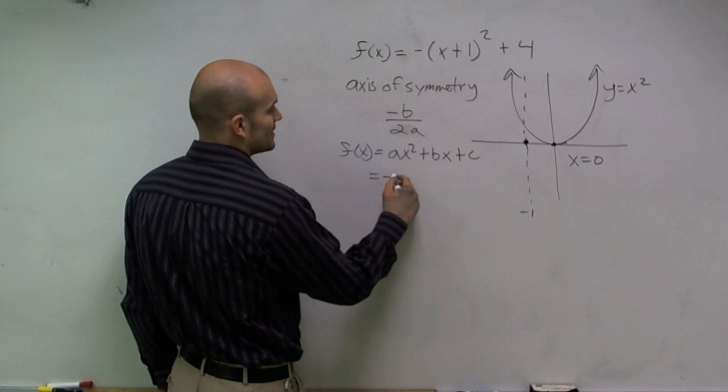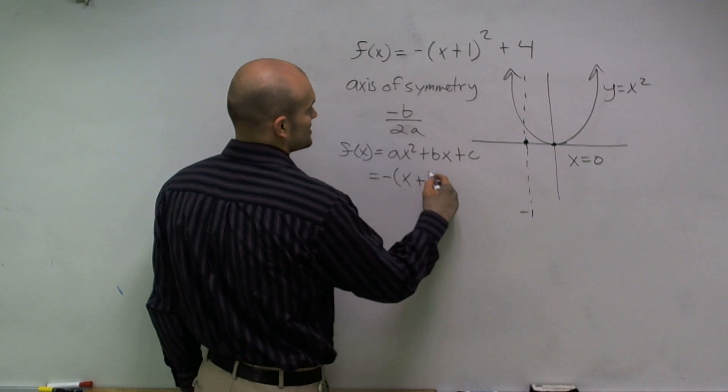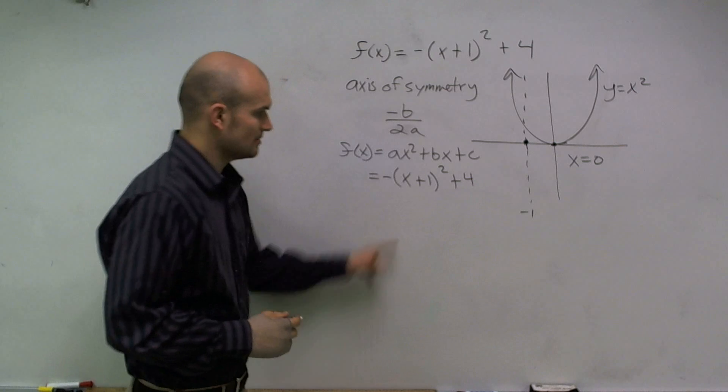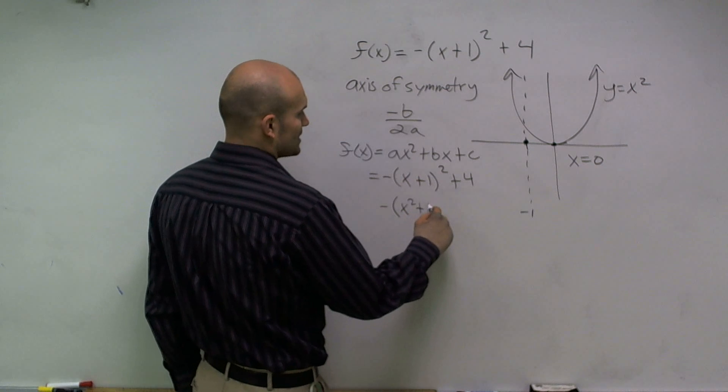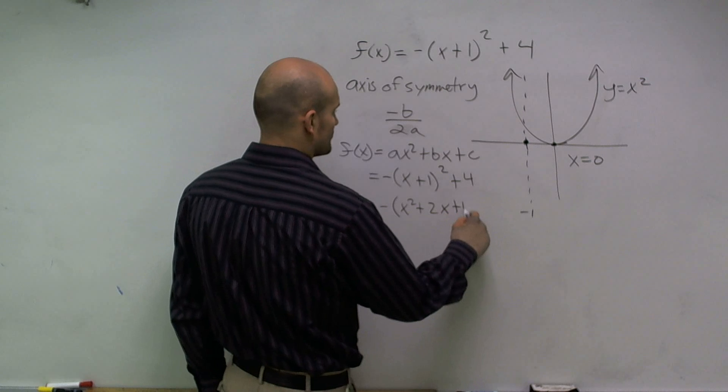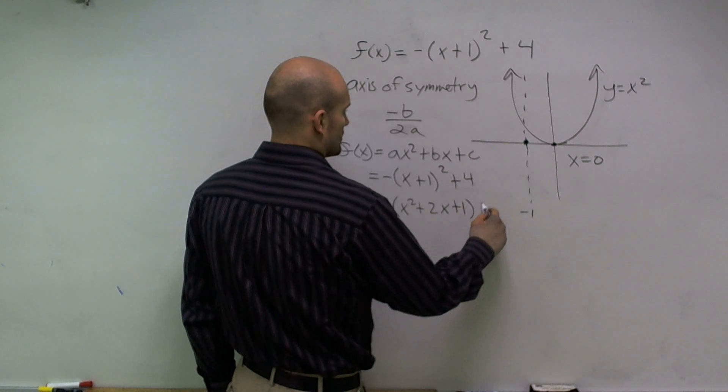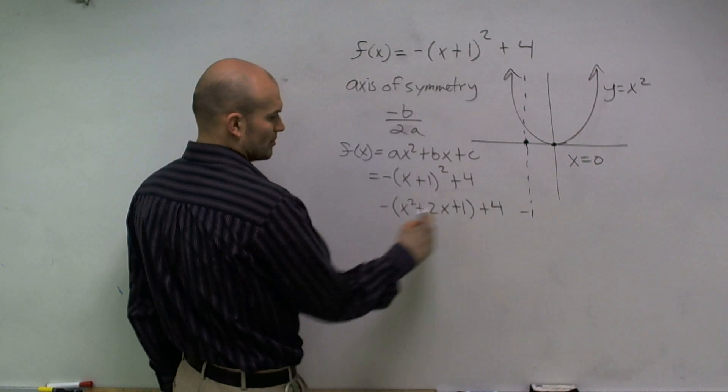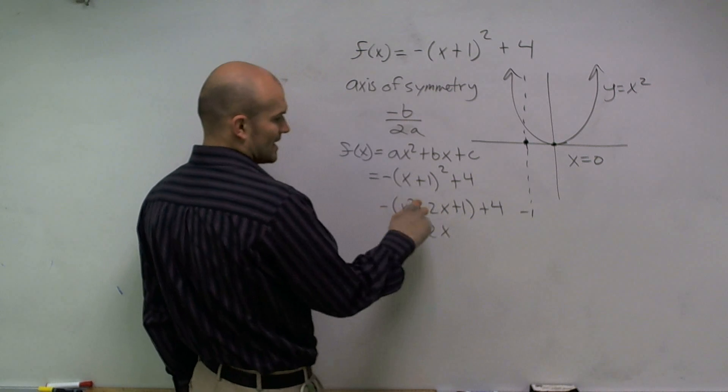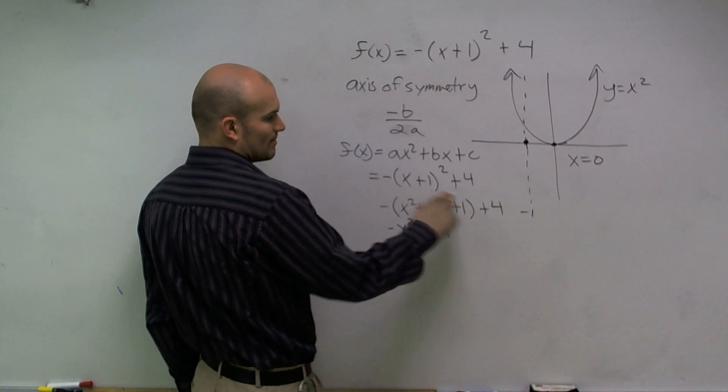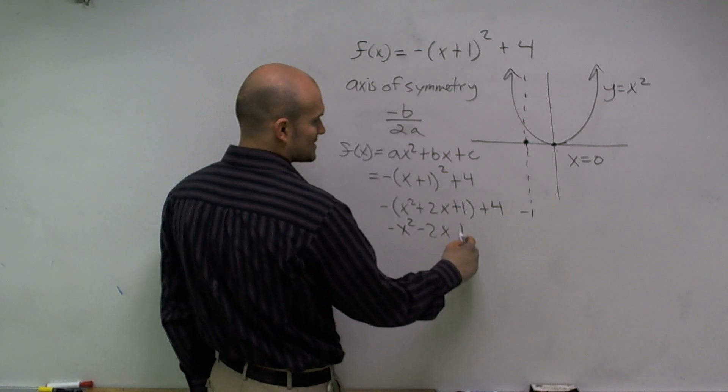If I was to expand this equation, x plus 1 squared is x squared plus 2x plus 1 plus 4. Distribute my negative sign, so minus x squared minus 2x minus 1. 1 minus 1 is negative 1, plus 4 is positive 3.